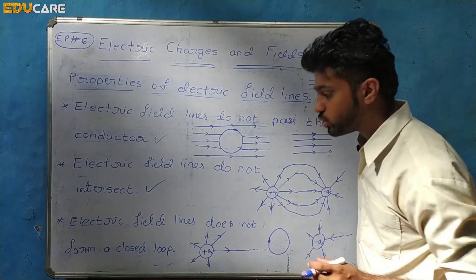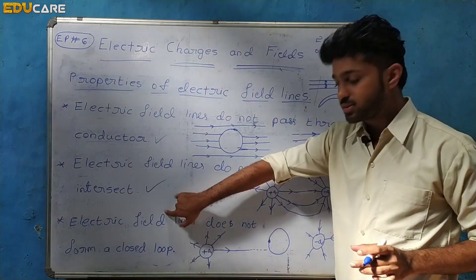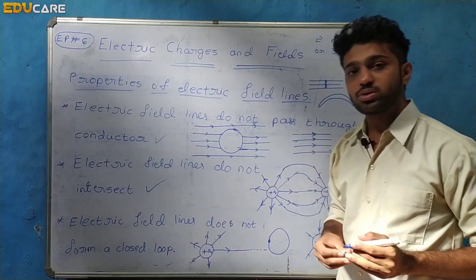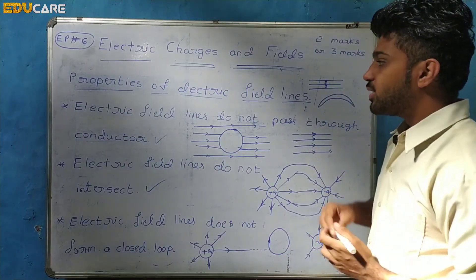Electric field lines do not form a closed loop. This is the final property of electric field lines.